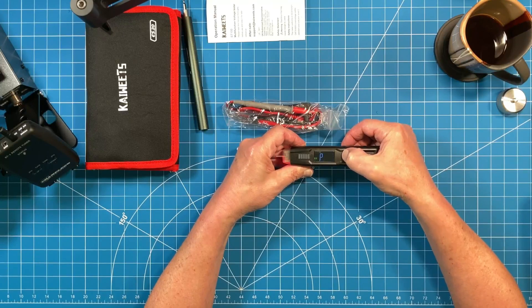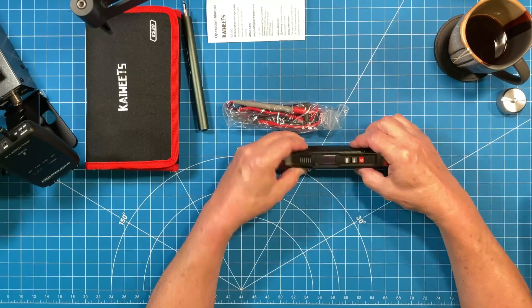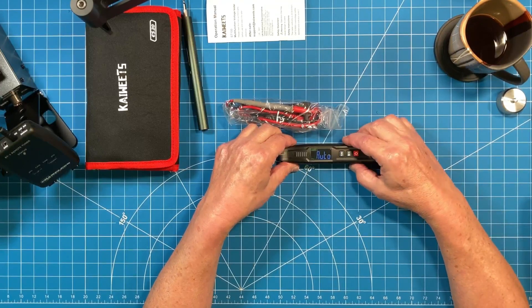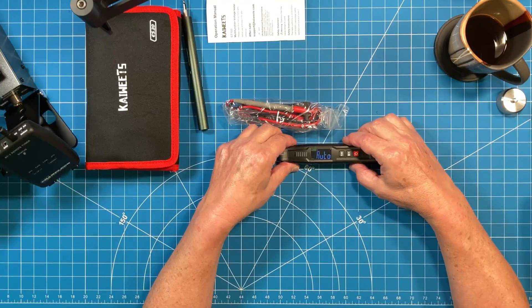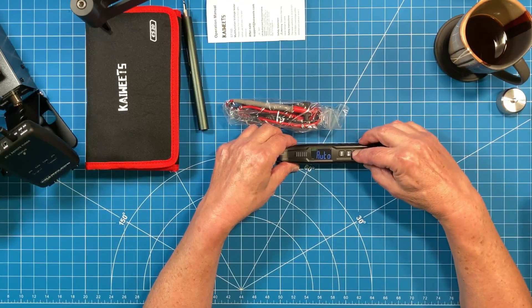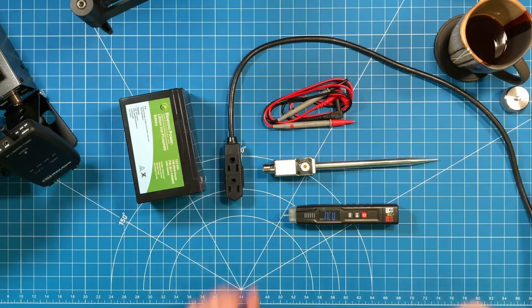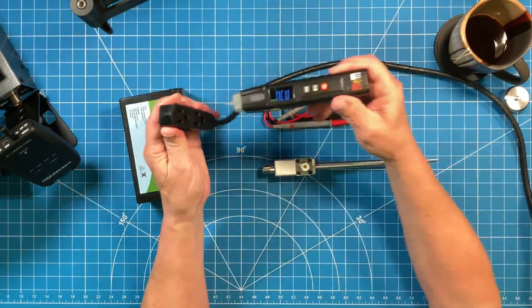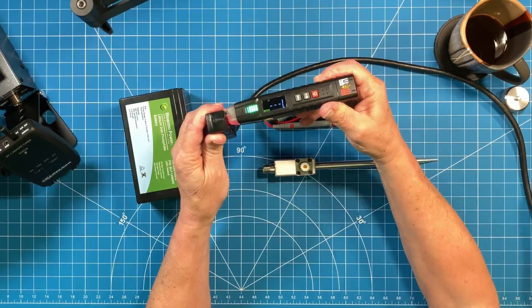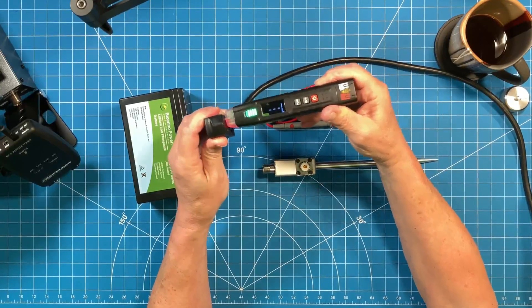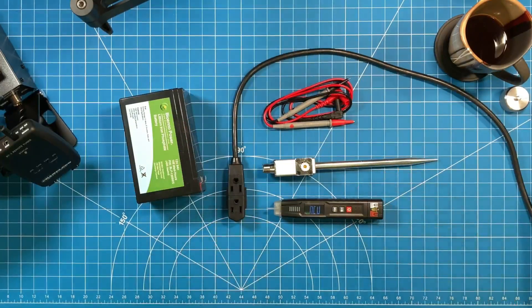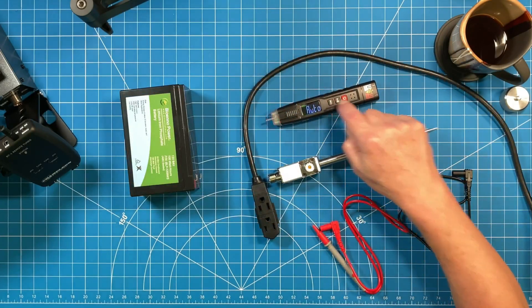Of course it can do much more than this, but primarily I use this in auto mode for testing continuity. That is the most common usage for me with a multimeter, and then checking voltage on my batteries. Non-contact voltage meters are great until they're not. Always check your breaker box to be sure things are turned off appropriately. Don't trust your life to this device, it's an indicator.